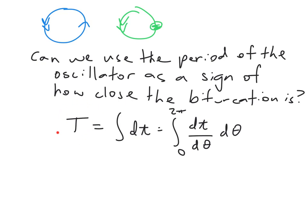How do we calculate the period of the oscillator? We're going to jump into that calculation and see where the distance to the bifurcation comes into it. Now the amount of time that it takes to go around the circle is just the integral of dt from my start time to my end time. The problem is, I don't know my start time and I don't know my end time.